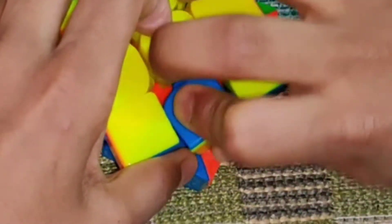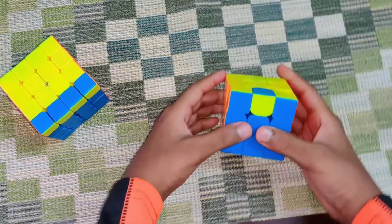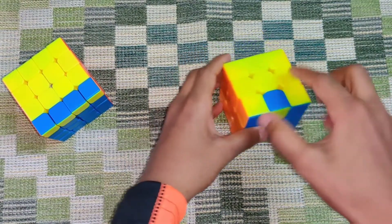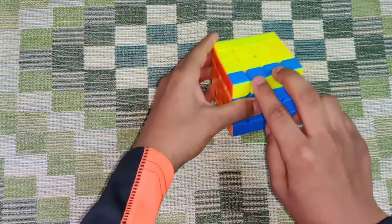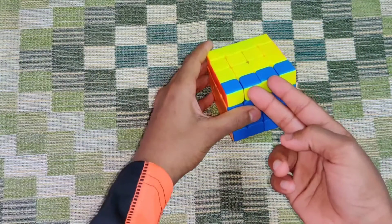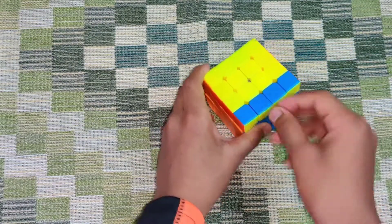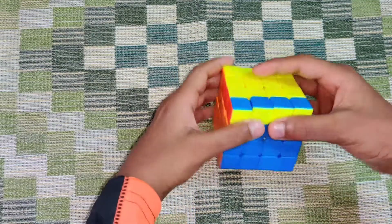Because you can't do an algorithm on a 3x3 to flip only one edge. So basically what's happening on this 4x4 is you're swapping these two edges and flipping them at the same time. So it's not just flipping the edge, you're flipping and swapping. That's why it's possible on a 4x4 and not on a 3x3.